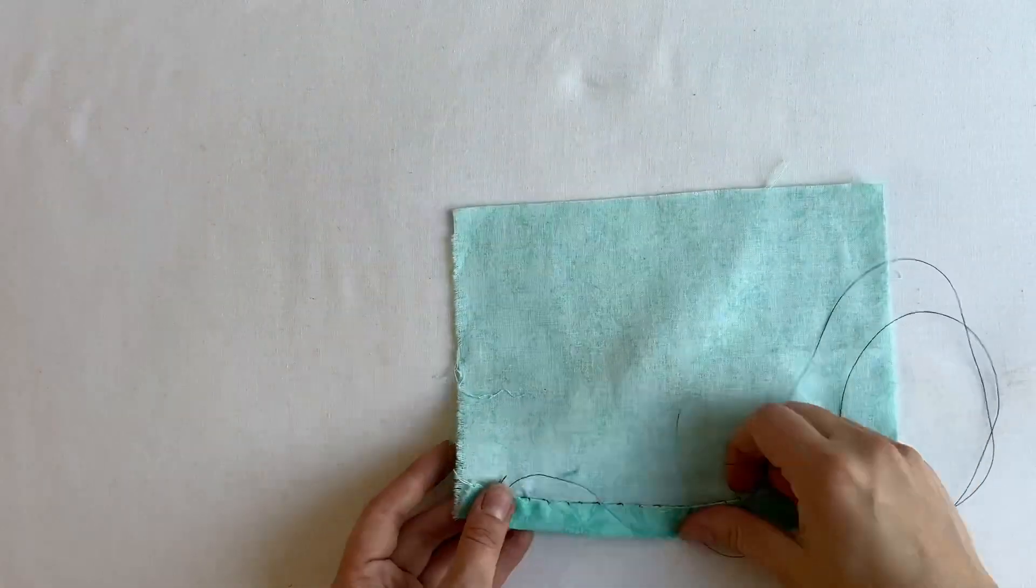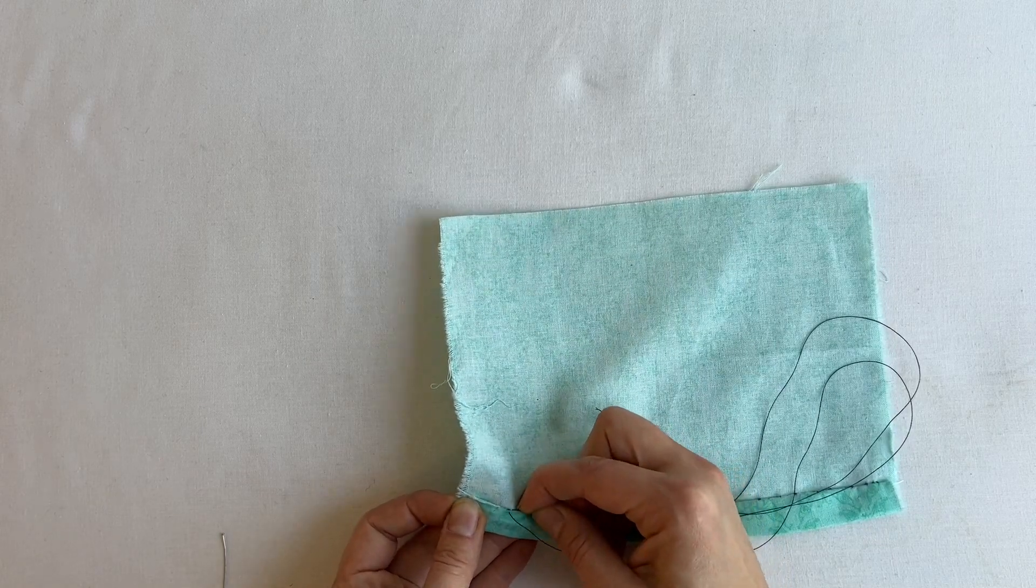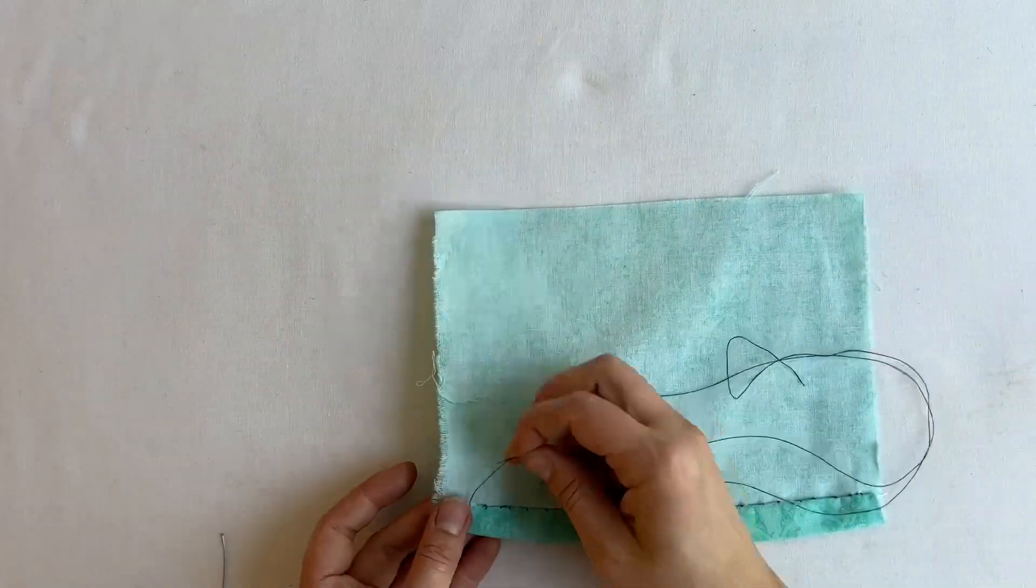Continue your slip stitch to the end of the fabric, making sure that you do not see the thread marks or the thread bites on the other side or the technical face of the fabric.